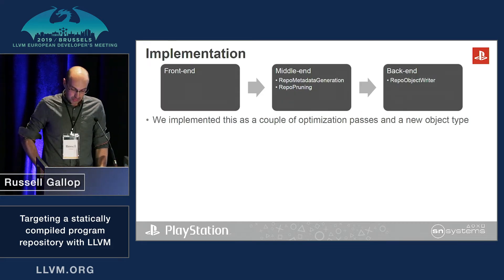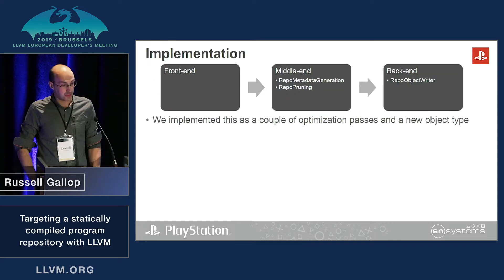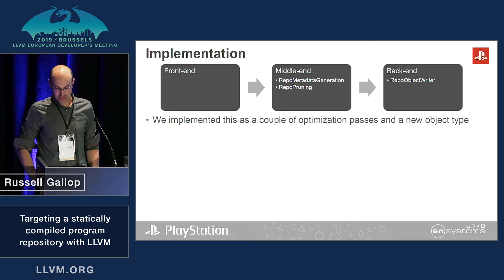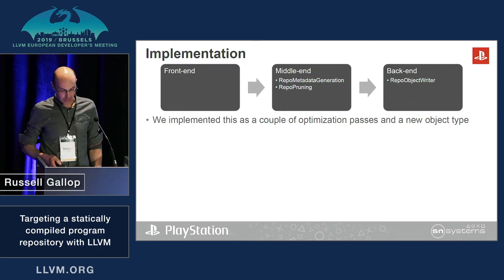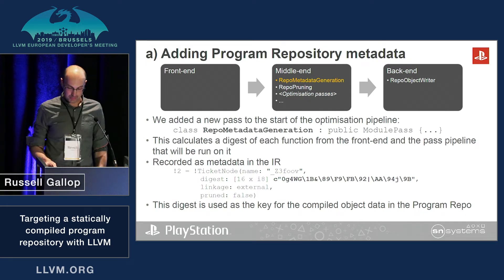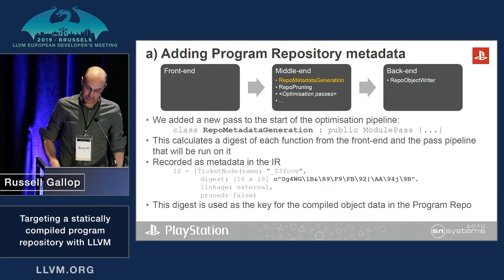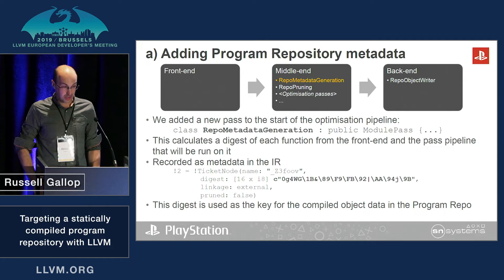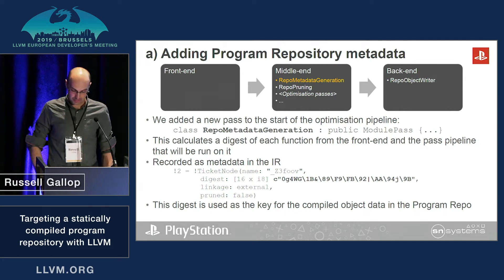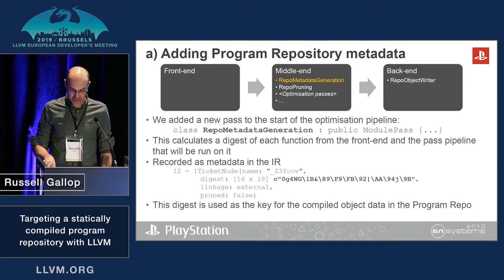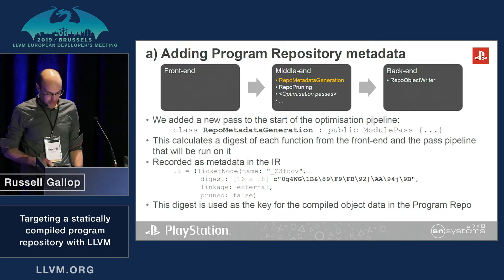The LLVM implementation of program repo consists of two new optimization passes and a new object type. The first pass is at the start of the optimization pipeline. It calculates the digest of each function from the front end and the options it will be optimized with. This is recorded as metadata in the IR, and the digest is used later as a key for the compiled object data in the program repo.